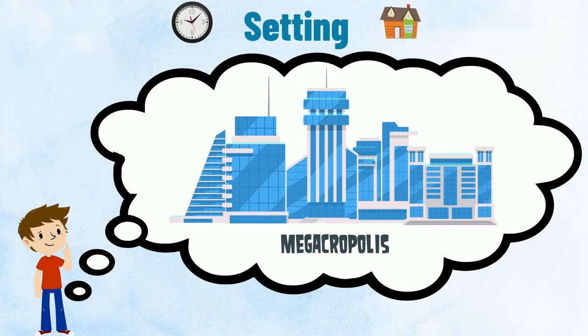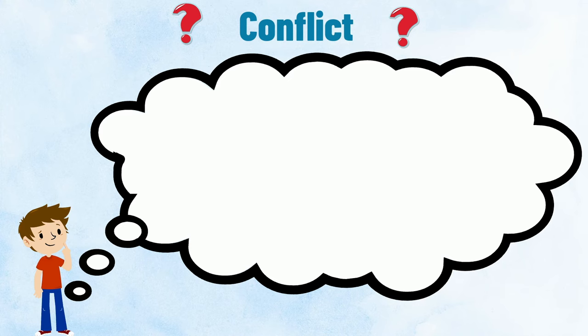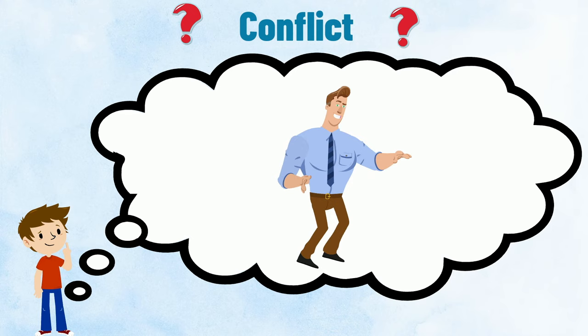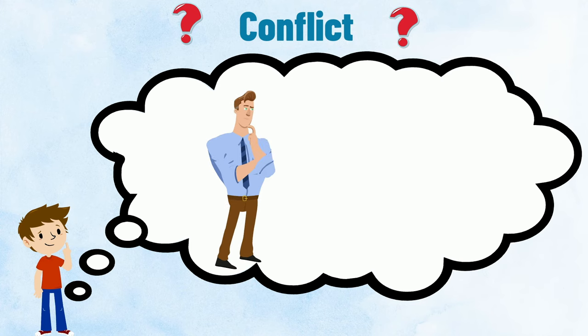Then, I will think of a conflict for my narrative. Dr. Ice disguises himself as Larry the firefighter to take over the Megacropolis Tower. His evil plan is to freeze the city in a huge block of ice by launching an ice rocket from the top of the tower. Mr. Awesome is also in disguise, but as Steve, the CEO of a company at Megacropolis Tower, he must find a way to stop Dr. Ice from acting out his evil plan.